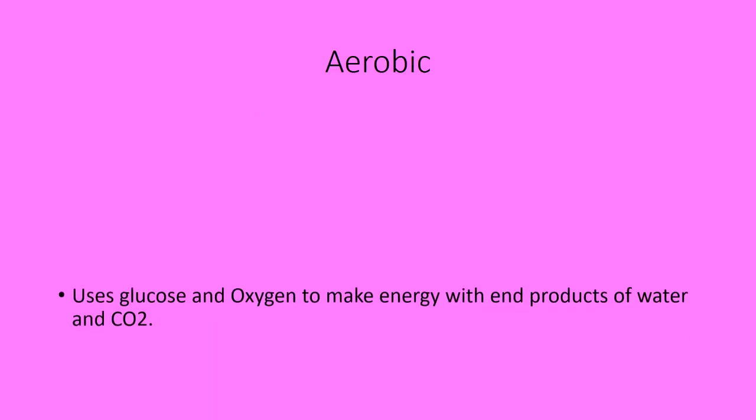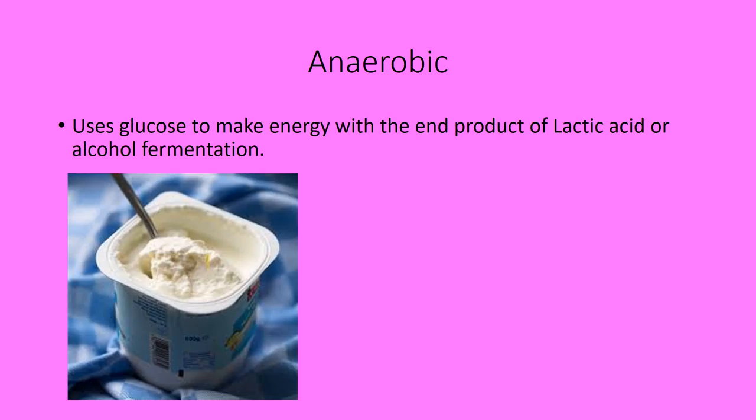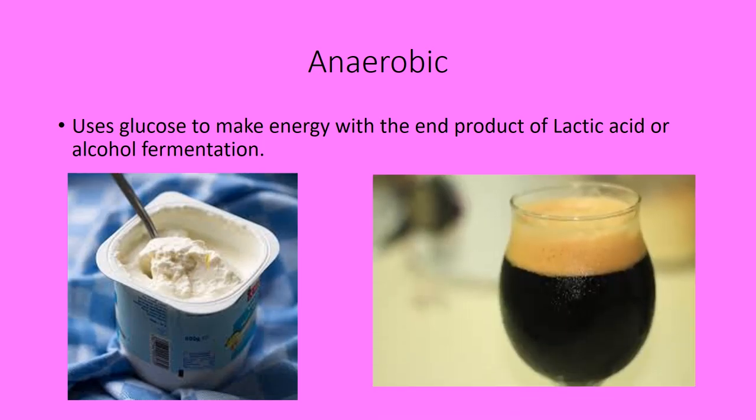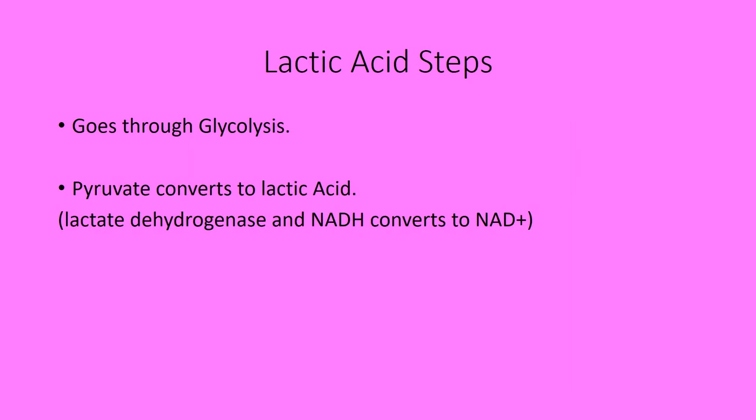Aerobic cellular respiration uses glucose and oxygen to make energy, with the end products of water and CO2. It goes through glycolysis, the Krebs cycle, and the electron transport chain and chemiosmosis.